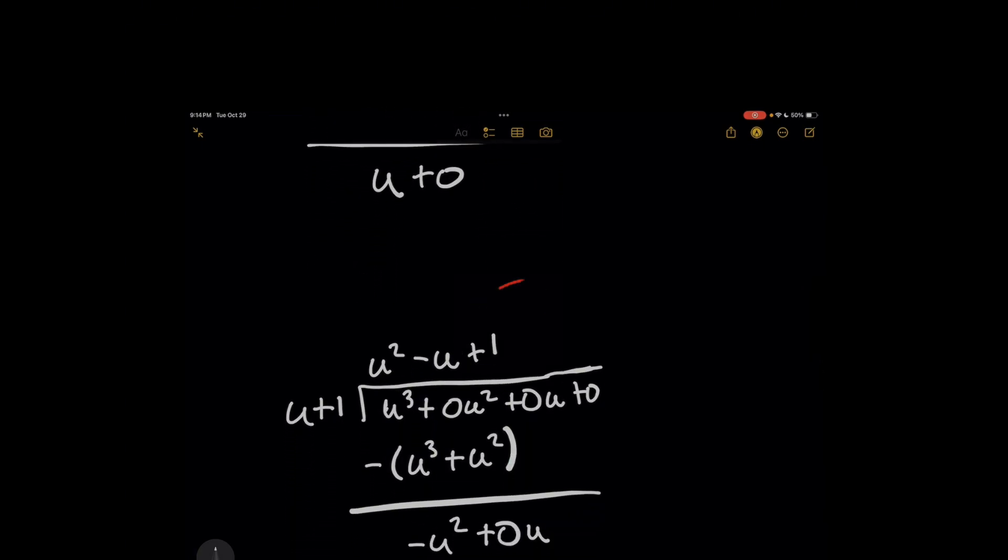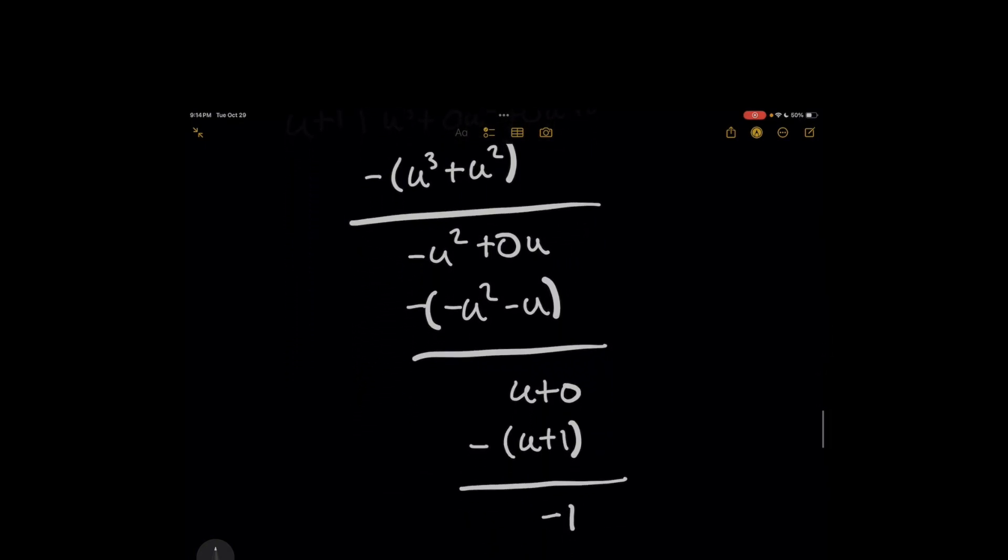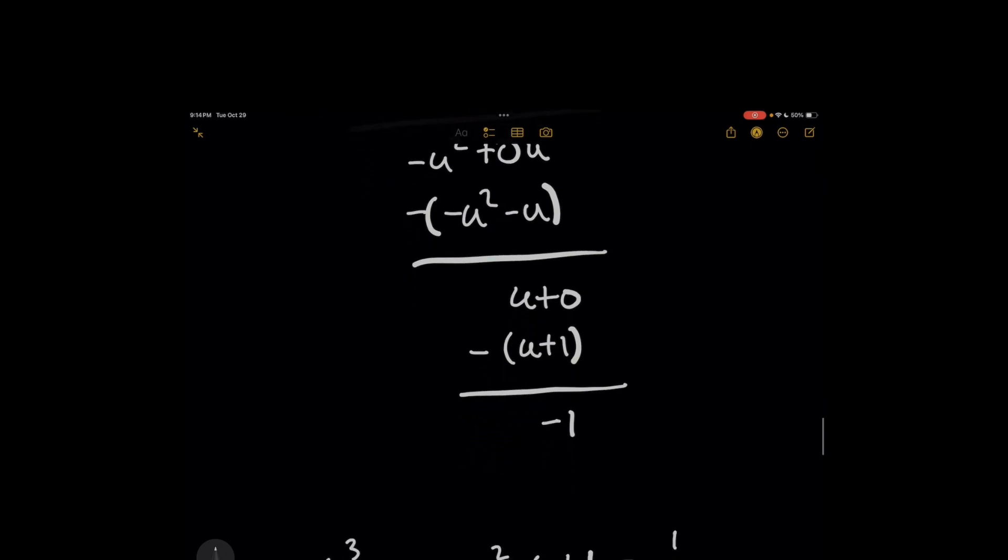So I'm going to add this 1 here to the dividend. And I'm going to repeat once again. So 1 times every term in the divisor will be giving you u plus 1 below. And when I subtract everything, I'll get minus 1 and I'm done. I'm left with this final coefficient here.